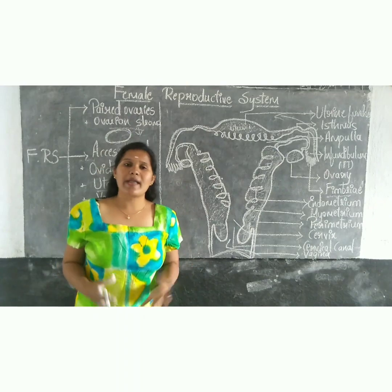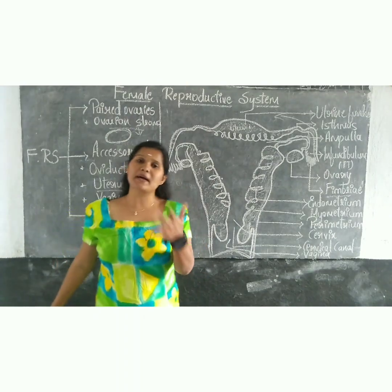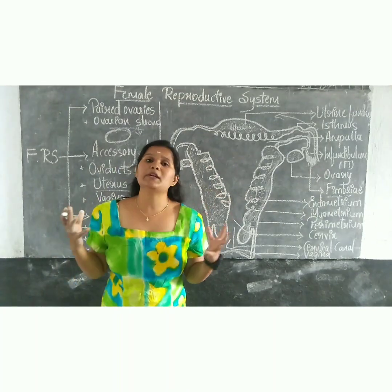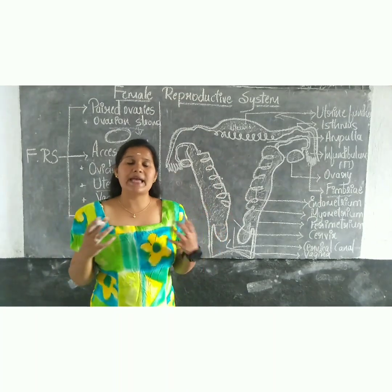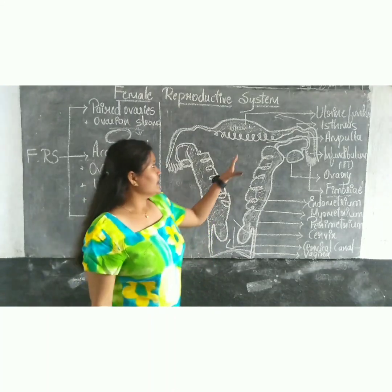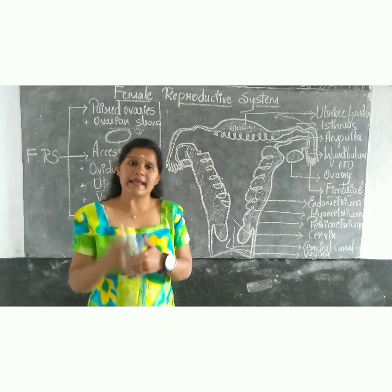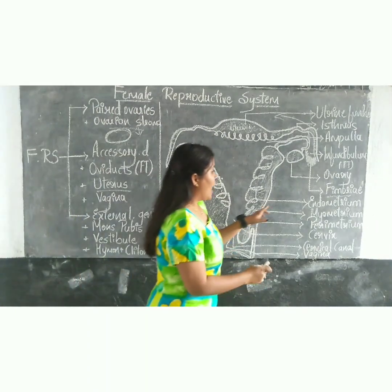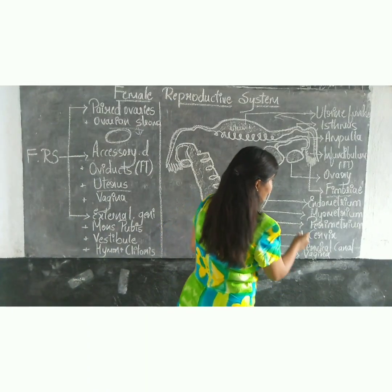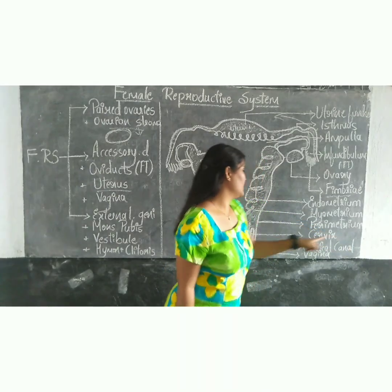The uterus is also called the womb, where the baby is formed. It is shaped like an inverted pear. The uterus has three layers. The first is the outer layer called the perimetrium, which is thin and protective in nature.